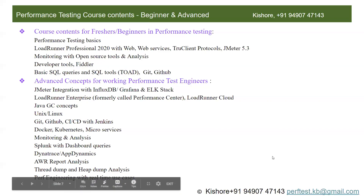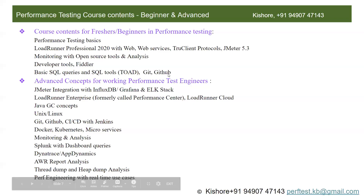The course duration for freshers or beginners would be 80 to 200 hours — a duration of two to three months. Advanced concepts would be 40 to 50 hours. I maintain a tracker for each batch. I'll show you the tracker for previous batches so you can see these numbers are real-time numbers collected from previous batches.